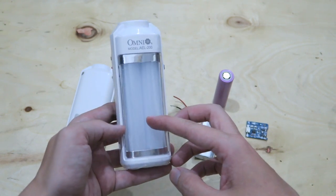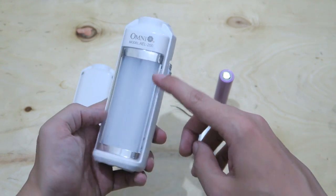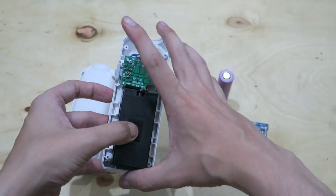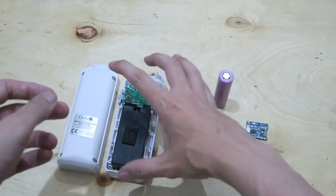Hi everyone, in today's video we're going to modify the battery in this Omni rechargeable light. It comes with a lead acid battery, but I want to put a lithium battery in there.